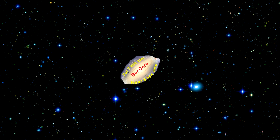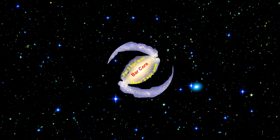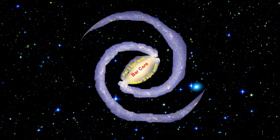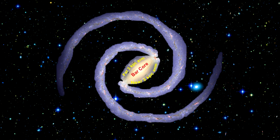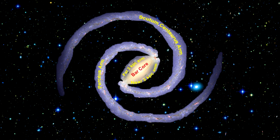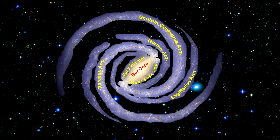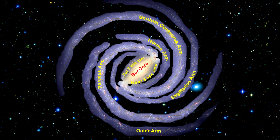Using infrared images from Spitzer, scientists discovered that the Milky Way's elegant spiral structure is dominated by just two arms wrapping off the ends of the central bar — named Scutum-Centaurus and Perseus. Each of these major arms consists of billions of young and old stars. Three thinner arms spiral out between the two giant arms: Sagittarius, Norma, and the Outer Arm. These are primarily filled with gas and pockets of star-forming activity.